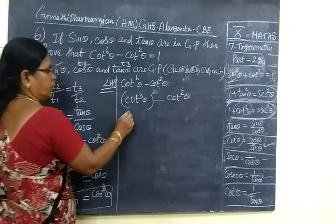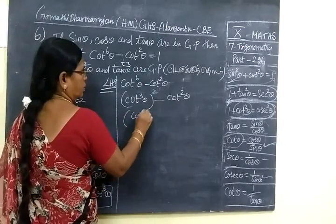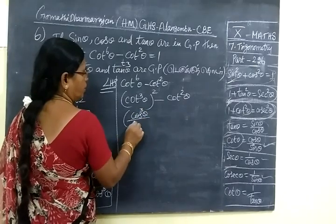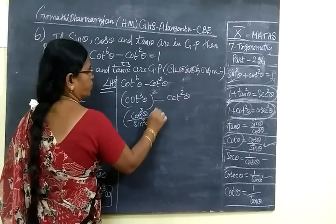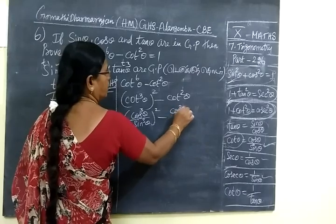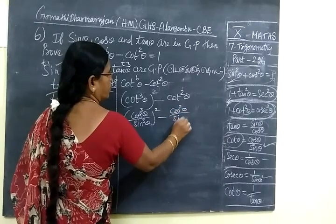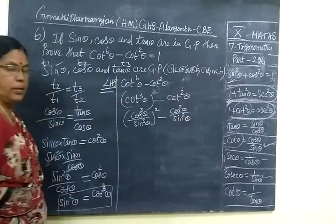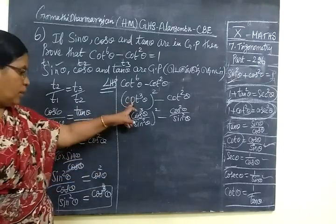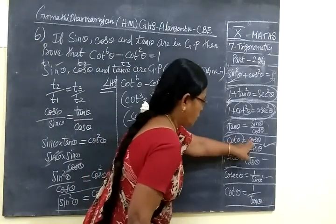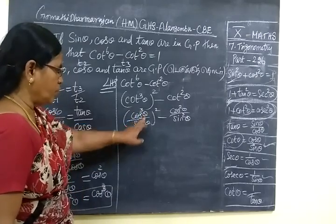Cos theta, cos cube theta minus sine cube theta. Cos square theta by sine square theta. Cos will be formed cos by sine, cos cube theta.